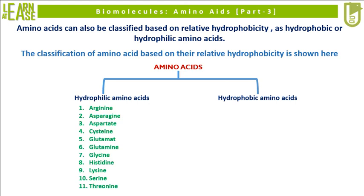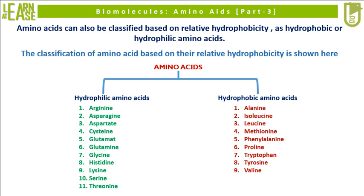Arginine, asparagine, aspartate, cysteine, glutamate, glutamine, glycine, histidine, lysine, serine, and threonine are categorized as hydrophilic amino acids.